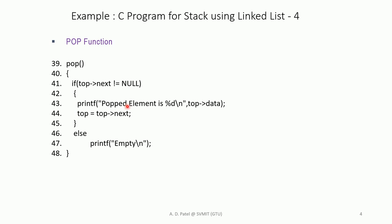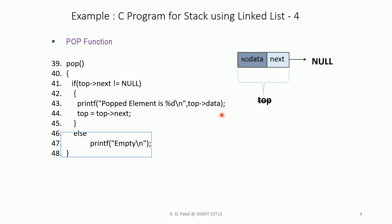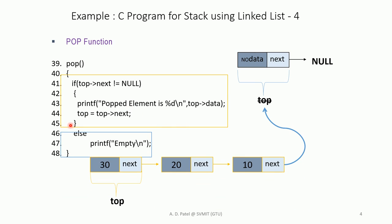If this condition is true, we execute printf to display the popped element using top->data. This prints the data stored in top's data portion to the console. Then top = top->next updates top to the next node, so the previous next element becomes the new top and the pointer points to the element before it in the stack.